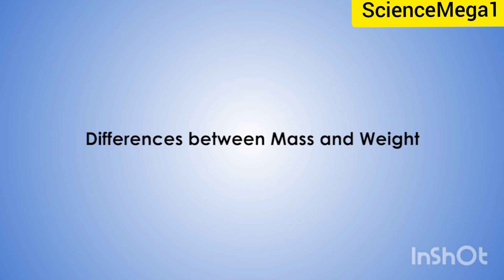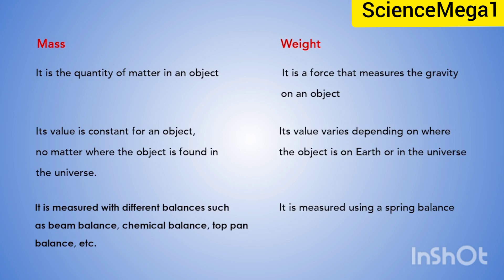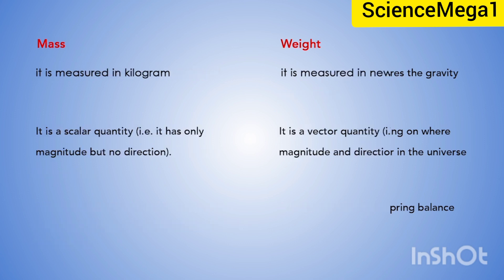Now let's look at the differences between mass and weight. Mass is the quantity of matter contained in an object, whilst weight is the measure of the force of gravity acting on a body. The value of mass is constant for an object no matter where the object is found in the universe, whilst the value of weight varies depending on where the object is found on the earth or in the universe. Mass is measured with different balances such as the beam balance, chemical balance, and top pan balance, whilst weight is measured using a spring balance. Mass is measured in kilograms, whilst weight is measured in newtons. Mass is a scalar quantity — it has only magnitude but no direction — whilst weight is a vector quantity because it has both magnitude and direction.